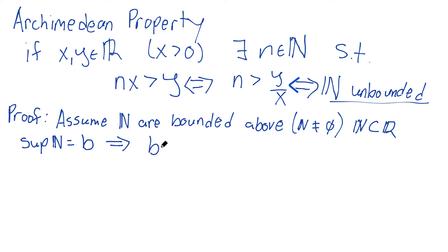B minus one is definitely not an upper bound for N. Otherwise it would be lower than the least upper bound. But if B minus one is not an upper bound, well then there has to be something in N,